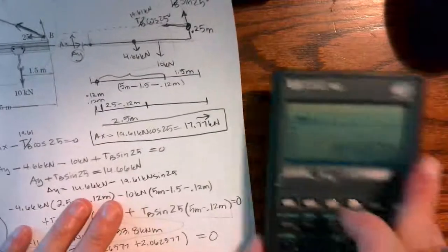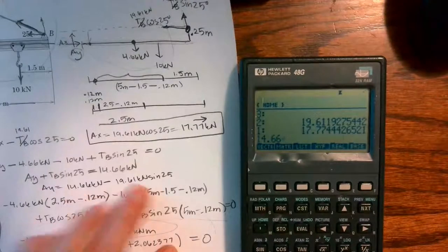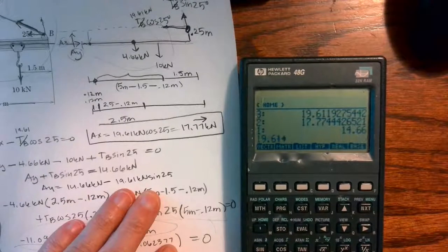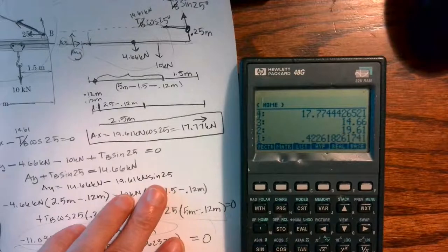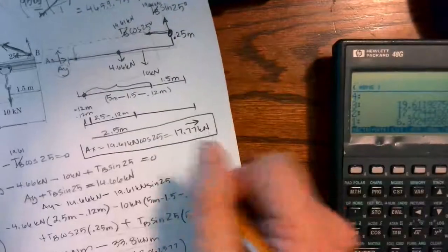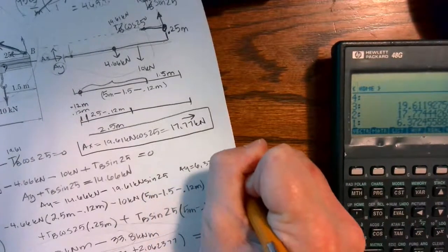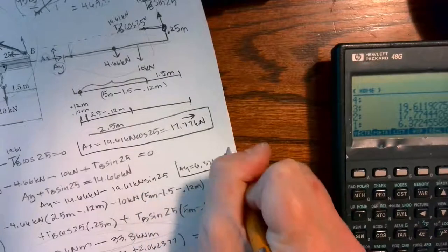Now that I know the tension here, I can rewrite this as Ay equals 14.66 kilonewtons minus 19.61 kilonewtons sine of 25, and I get that Ay equals 6.37 kilonewtons up.